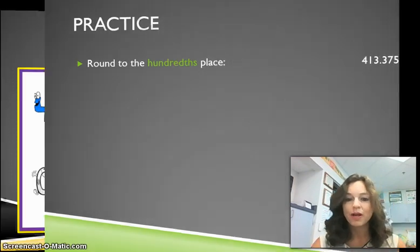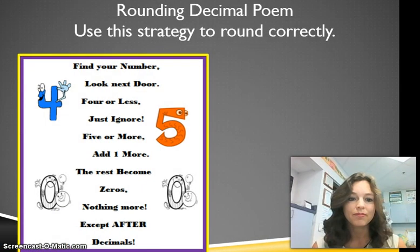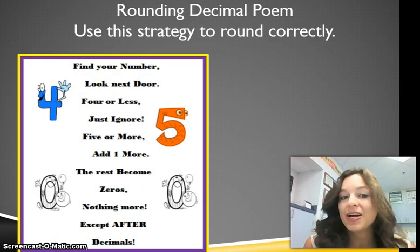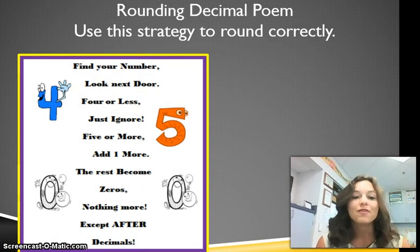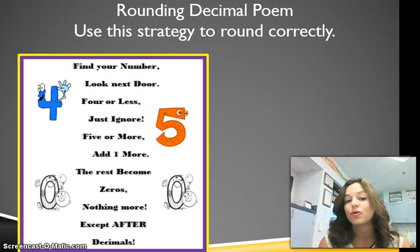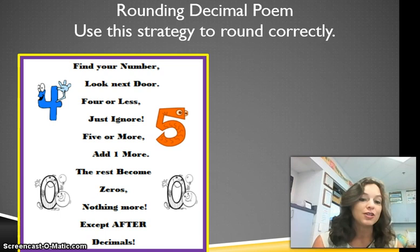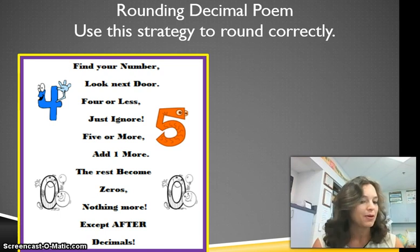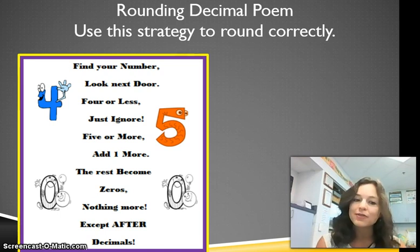Let's practice our poem again — say it along with me: find your number, look next door, 4 or less just ignore, 5 or more add one more, the rest become zeros, nothing more, except after decimals.